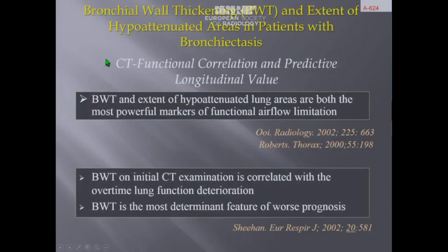Beyond the scoring index, the radiologist reporting this examination must be aware that bronchial wall thickening and extent of hypoattenuated lung areas are both the most powerful markers of functional airflow limitation. Furthermore, bronchial wall thickening on initial CT examination is correlated with overtime lung function deterioration, meaning that bronchial wall thickening is the most determinant feature of worse prognosis.